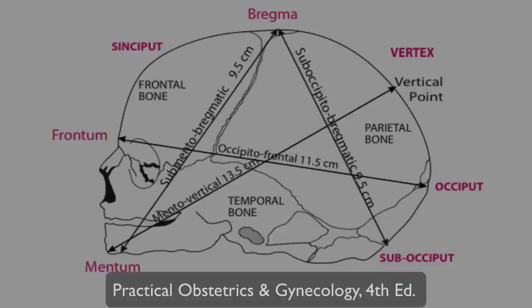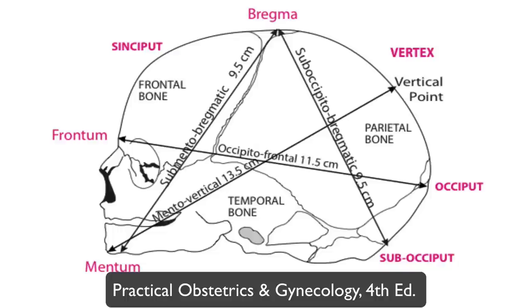The following line diagrams from my book Practical Obstetrics and Gynecology will help you revise the important diameters of engagement. The sub-occipito bregmatic diameter for occipito-anterior position is 9.4 cm. The occipito-frontal diameter for occipito-posterior position is 11.5 cm. The mento-vertical diameter for brow presentation is 13.5 cm. The sub-mento bregmatic diameter for face presentation is 9.4 cm. And lastly, the biparietal diameter, which is 9.5 cm at full term.